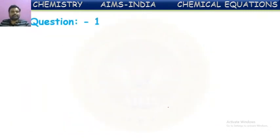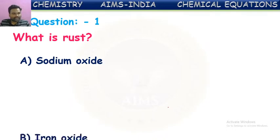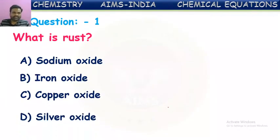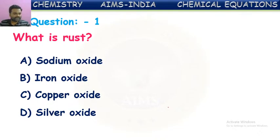Let us see some assessment questions based on previous contest questions. First question: what is rust? The options are sodium oxide, iron oxide, copper oxide, or silver oxide — which of these metal oxides represents rust? Many of you have given the correct answer: it is iron oxide. When iron is kept in the atmosphere, it reacts with oxygen and forms iron oxide, which is called rust.